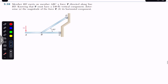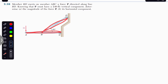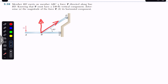The problem says that member BD exerts on member ABC a force P directed along line BD. So this BD member is applying the force on this AB member along this BD line. It is said that knowing that P must have a 240 pound vertical component, we are required to determine the magnitude of the force P and its horizontal component.